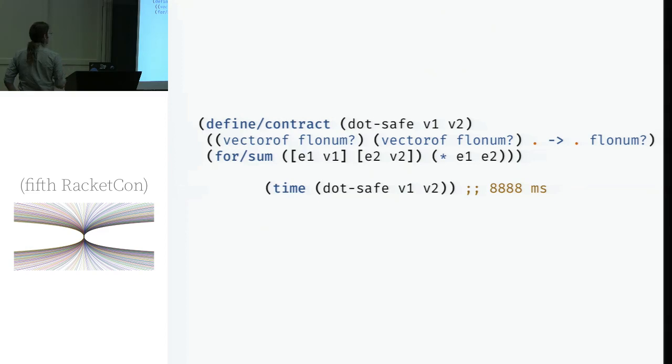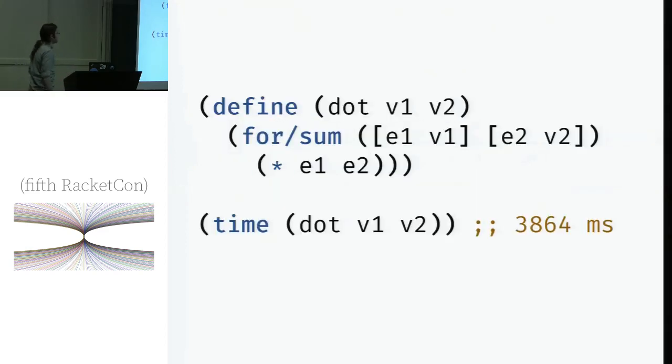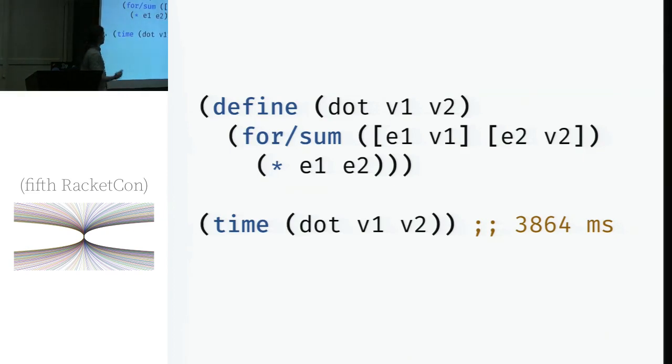Now, the first thing we want to do if we want to make it run a little faster is we can subtract out the contracts, right? So that safety has a pretty significant runtime cost in this case. So we subtract those out. We're about two and a half times faster.